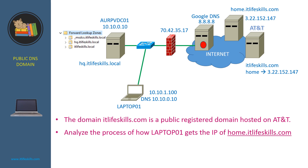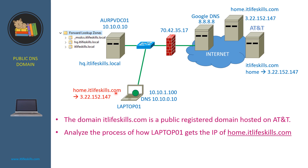Let's assume Google DNS server doesn't have the cache for the record home.it-live-skills.com, so it has to perform iterative queries. Finally, it finds AT&T DNS server and forwards the query to it. Since AT&T DNS server is the authoritative DNS server for the domain it-live-skills.com, it answers Google DNS's query. Upon receiving the answer, Google DNS server forwards the answer to OPVDC01, and OPVDC01 forwards the answer to Laptop01. That is how Laptop01 gets the IP address of home.it-live-skills.com as 3.22.152.147.